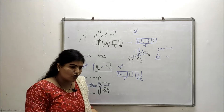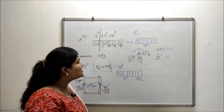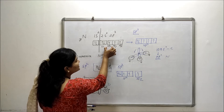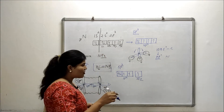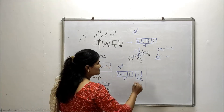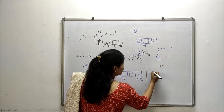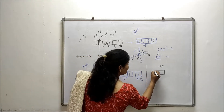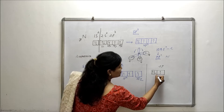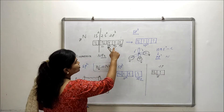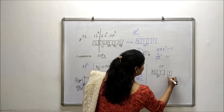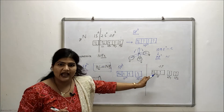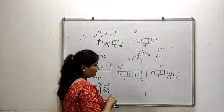Now let's discuss the molecule where nitrogen is in its sp hybridization. In sp hybridization, only 1 s and one of the 2p orbitals (say 2px) are involved in hybrid orbital formation, giving only 2 sp hybrid orbitals. The 2py and 2pz orbitals remain unhybridized.